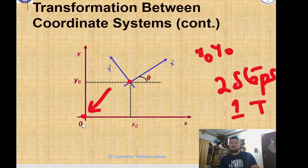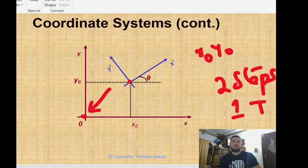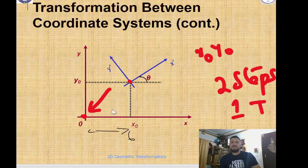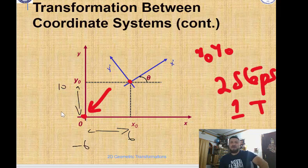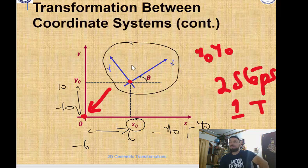Step one is translation. In translation, we take the origin of the local coordinate system, which is at x₀, y₀, and translate it so that it matches our origin. How much we translate is minus x₀ and minus y₀. For example, if x₀ is 6 and y₀ is 10, we do minus 6 and minus 10 to bring it back to zero.